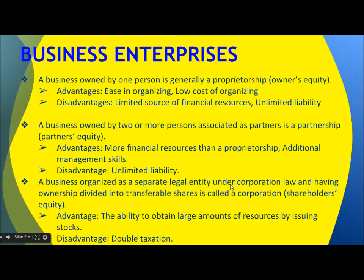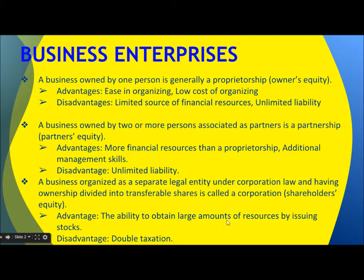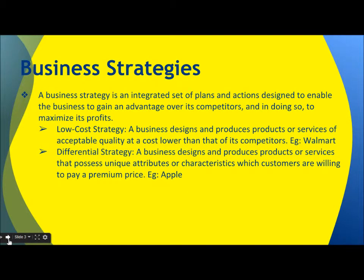The third kind is a corporation — a business organized as a separate legal entity under corporation law, with ownership divided into transferable shares. Its equity is called shareholders' equity. The advantage is the ability to obtain large amounts of resources by issuing stocks. The disadvantage is double taxation.